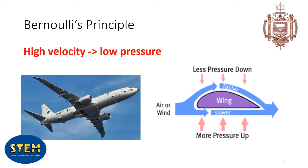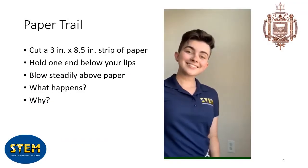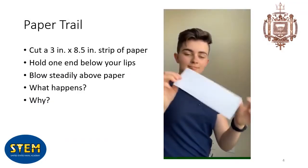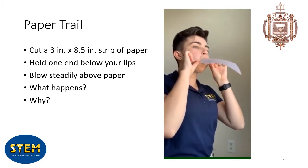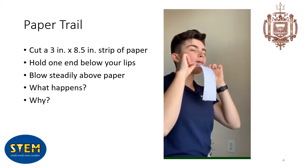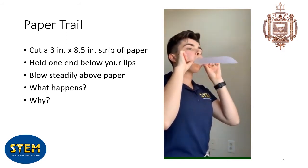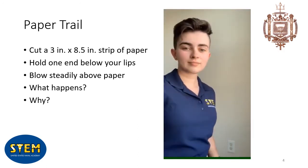There are a few ways that we can demonstrate this visually. These exercises will use common household goods, so you can try them for yourself at home if you'd like. In this first exercise, all you will need is a strip of paper, roughly three inches wide and eight and a half inches long. Take one end of the strip and hold it up to your lips, then blow steadily over the top. What you'll notice is that the paper will move upwards towards the fast moving air.